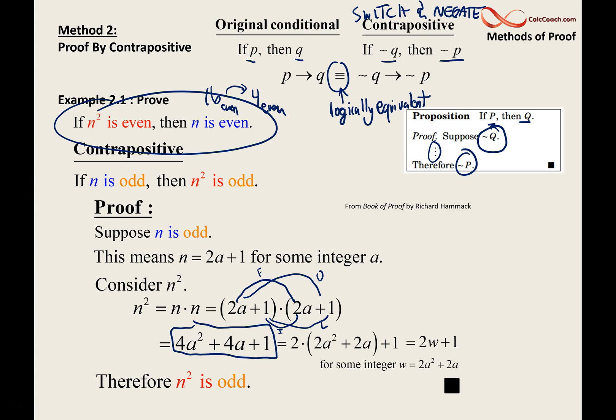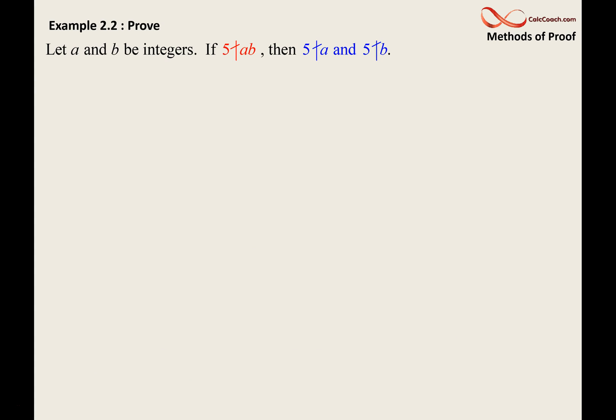Let's look at one more. Let a and b be integers. If 5 does not divide the product ab, then 5 does not divide a and 5 does not divide b. It makes sense.